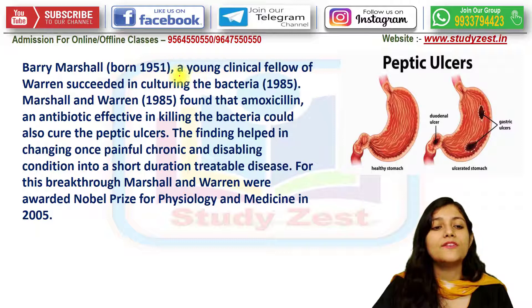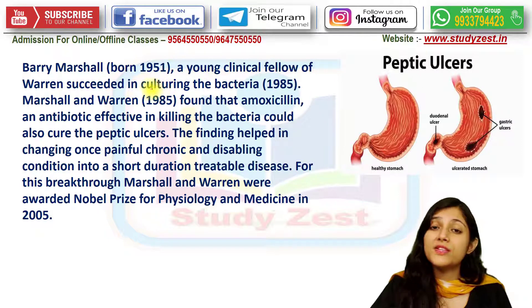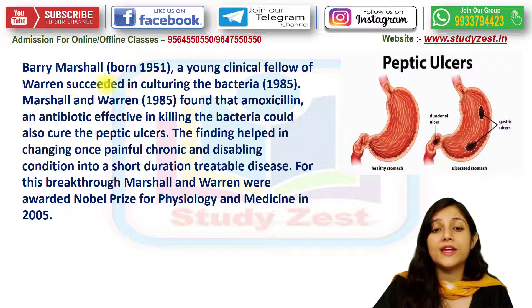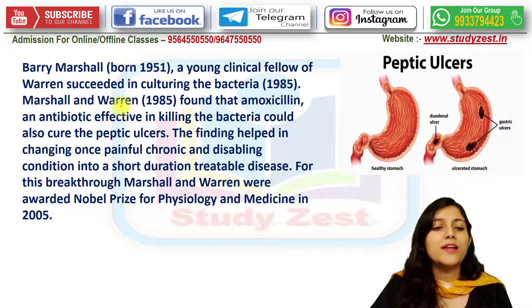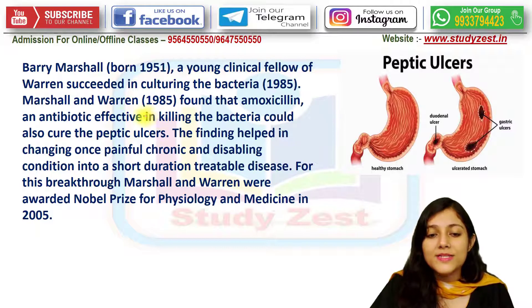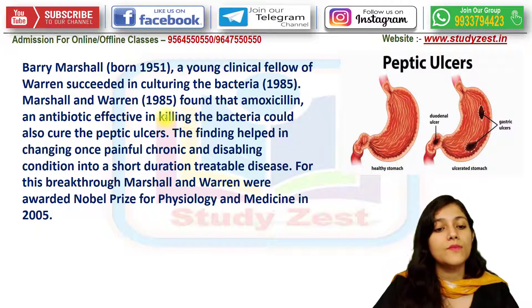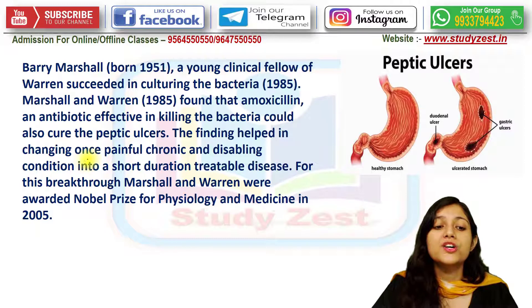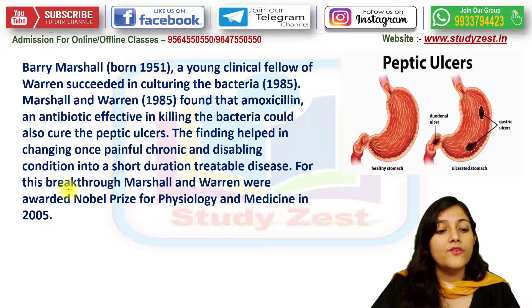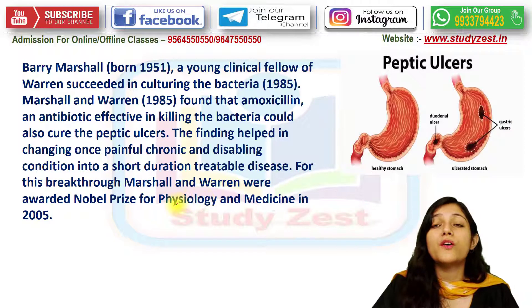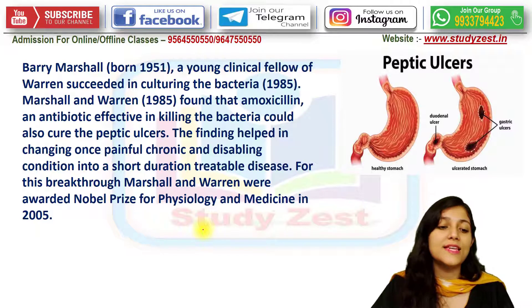Barry Marshall, a young clinical fellow of Warren, succeeded in culturing the bacteria in 1984-85. Together, Marshall and Warren found that Amoxicillin, an antibiotic, was effective in killing the bacteria and could be used to cure peptic ulcer. This finding changed a once painful, chronic, and disabling condition. For this breakthrough, Marshall and Warren were awarded the Nobel Prize for Physiology and Medicine in the year 2005.